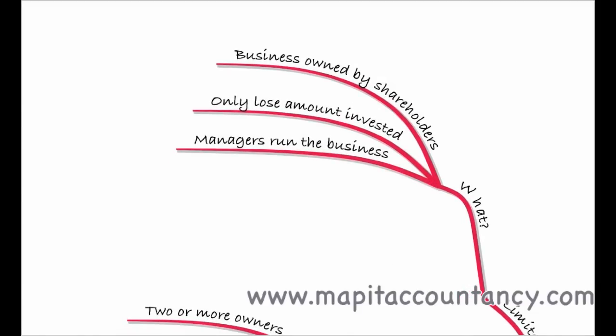You can only lose the amount that you've invested in a limited company — you can't lose any more. Managers run the business. In small limited companies the managers will often be the shareholders. In large limited companies, such as public companies, shareholders own the shares and appoint managers — directors — to run the business. In larger businesses, ownership by shareholders and management by directors are often separated.